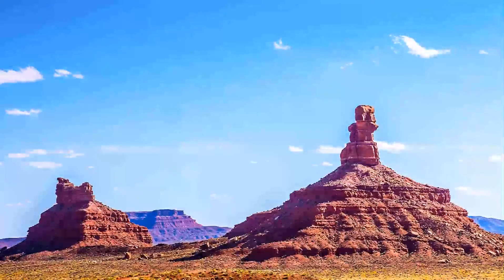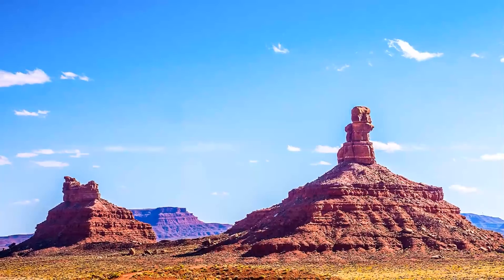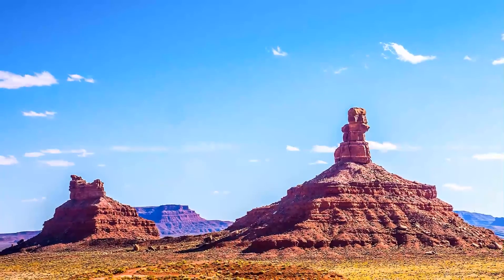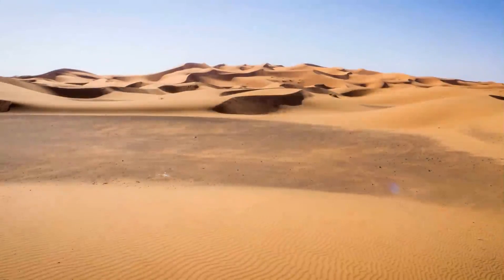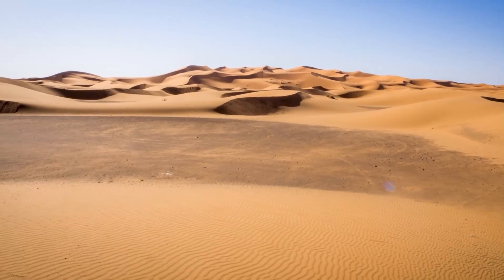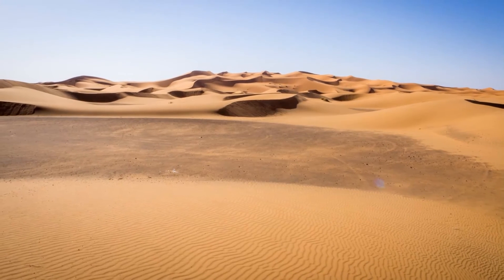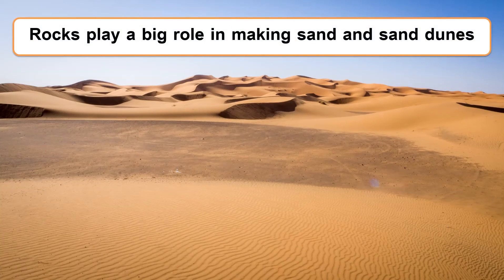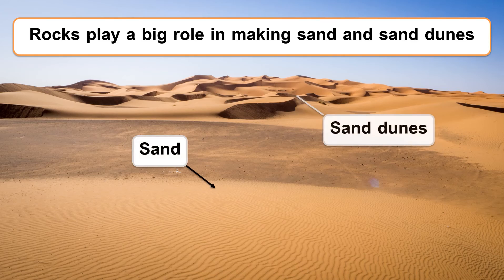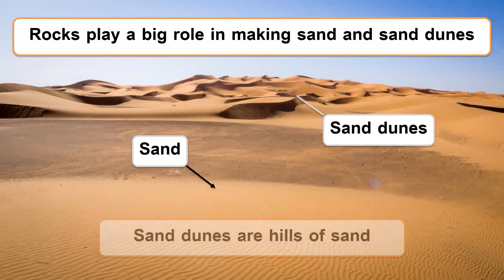We also must know that wind affects rocks. Wind causes rocks to erode, which makes sand. Rocks play a big role in making sand and sand dunes. Sand dunes are hills of sand.